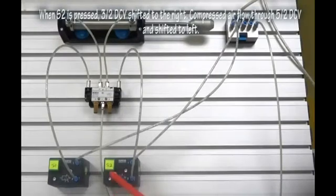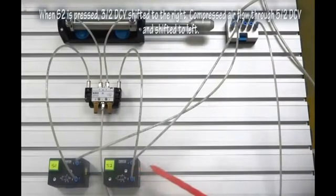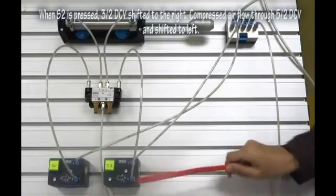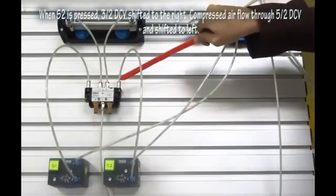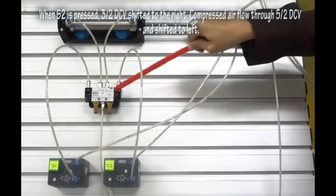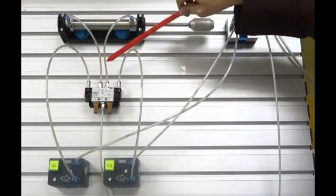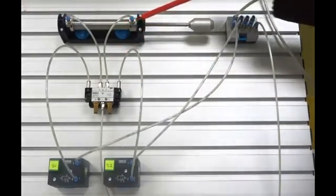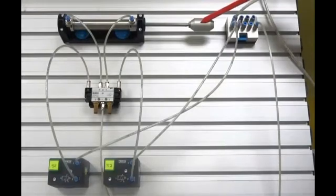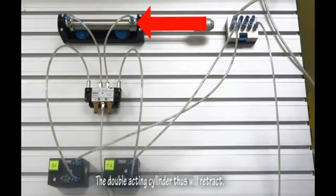When S2 is pressed, 3 2-way DCV shifted to the right. Compressed air flow through 5 2 DCV and shifted to left. The double-acting cylinder thus will retract.